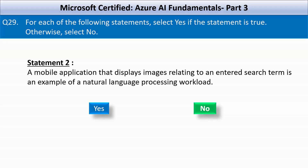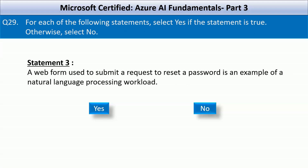While the app processes text input in the form of a search term, it primarily involves information retrieval and image processing rather than natural language understanding or generation. The third statement is: a web form used to submit a request to reset a password is an example of a natural language processing workload. This is also an incorrect statement. A web form typically consists of structured input fields like email or username and processes the request using back-end logic, authentication, and security mechanisms rather than interpreting or generating human language.